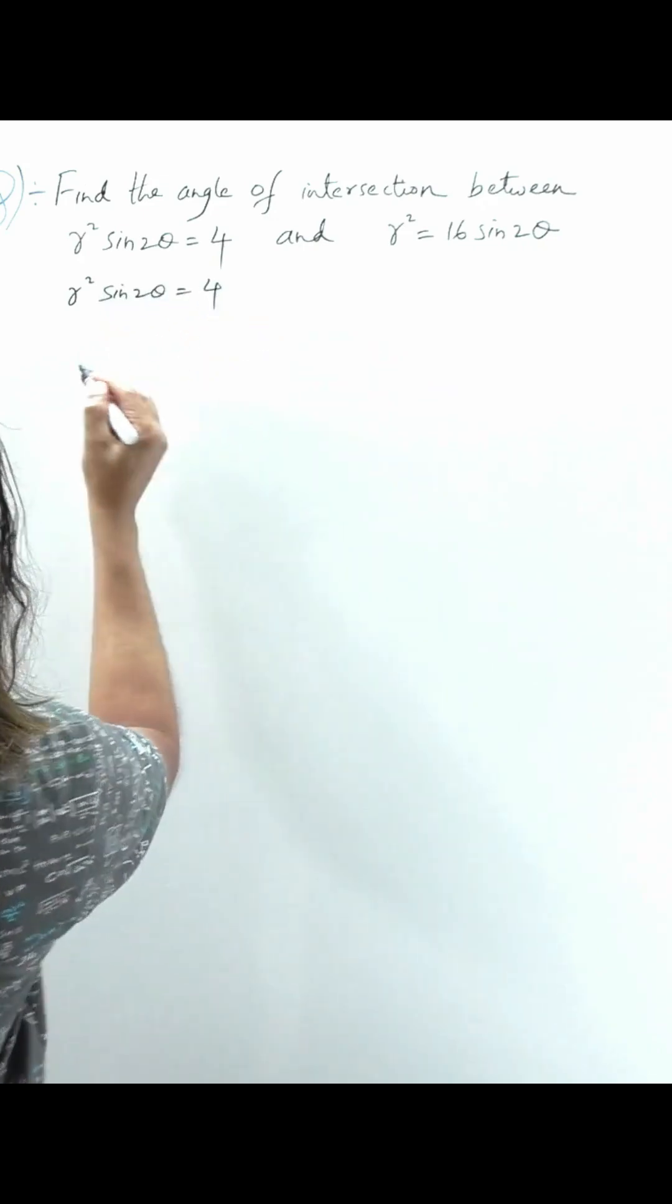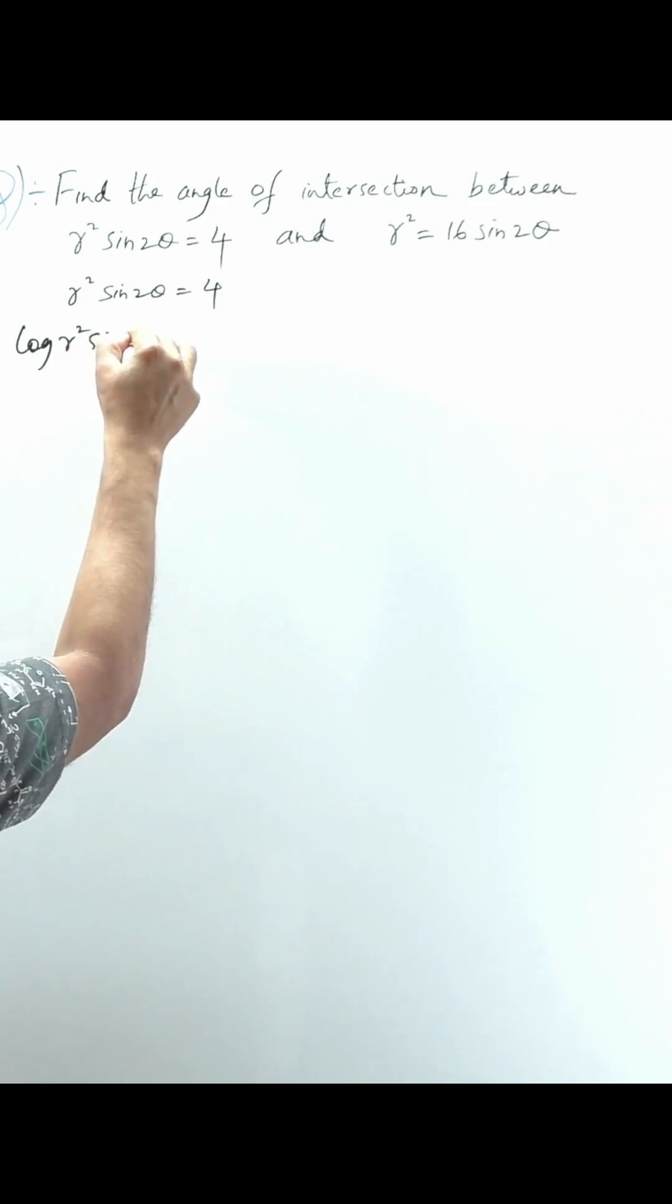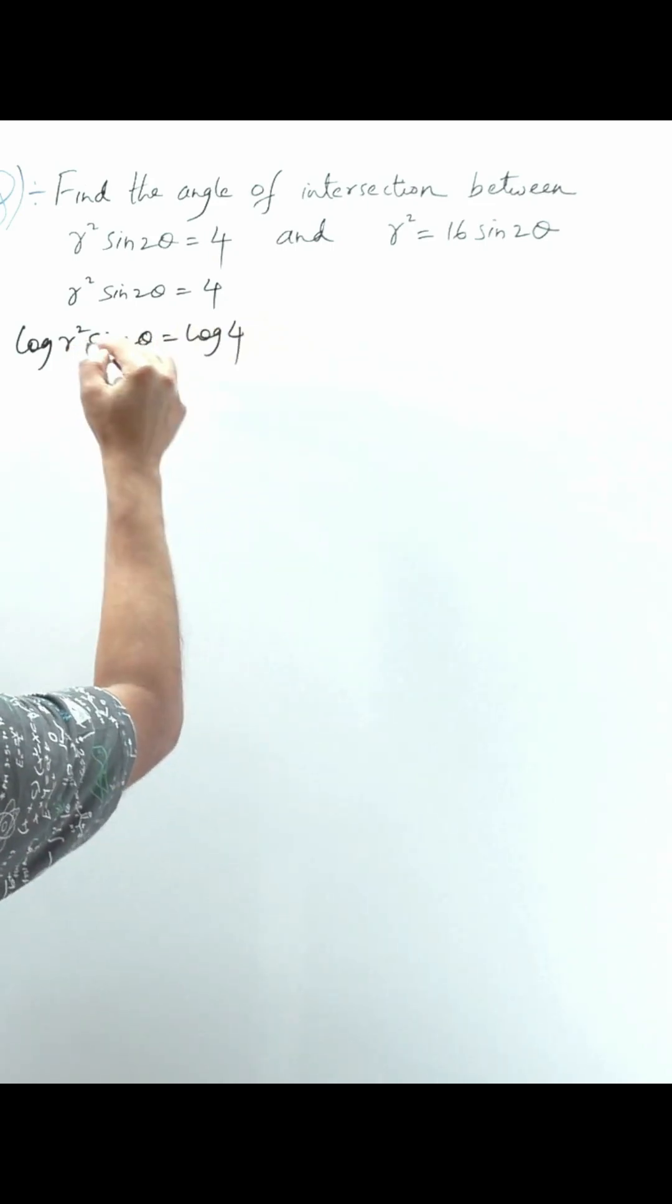r² sin 2θ is equal to 4. Apply log on both sides: log(r² sin 2θ) is equal to log 4.